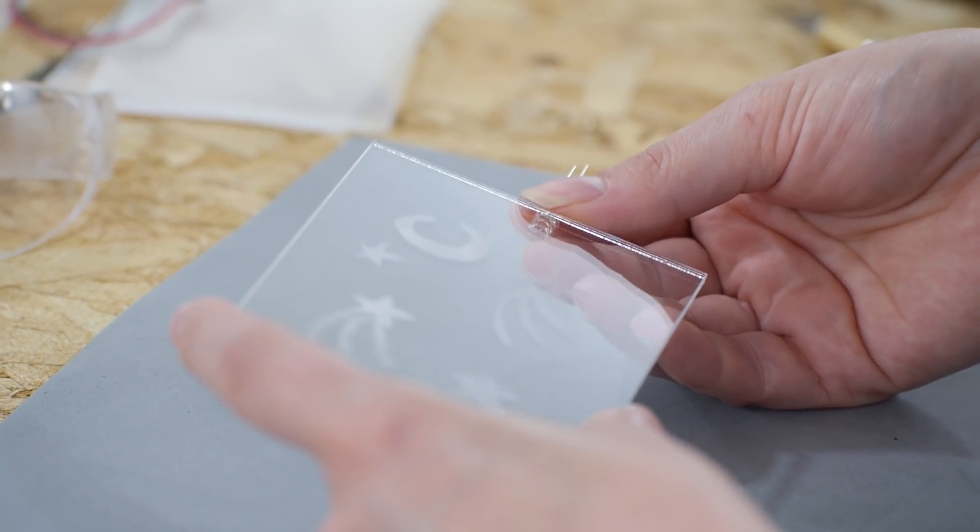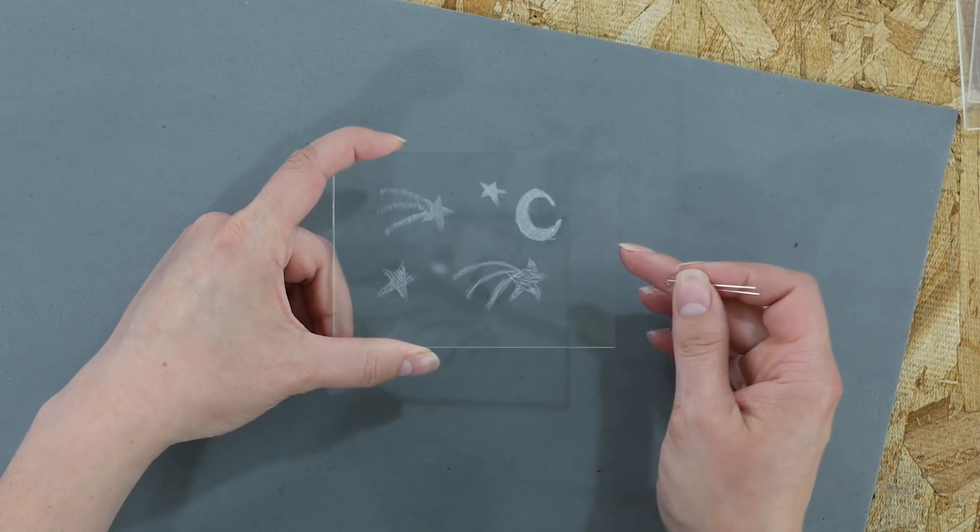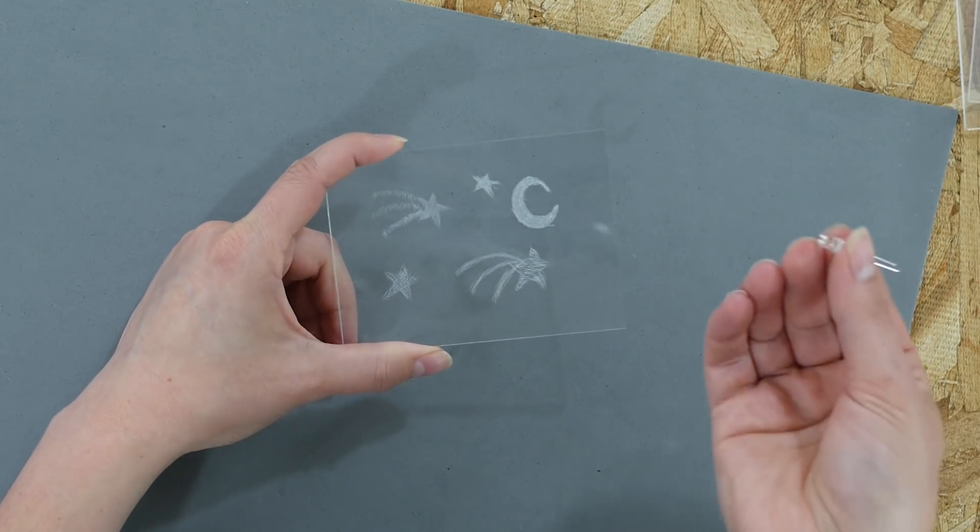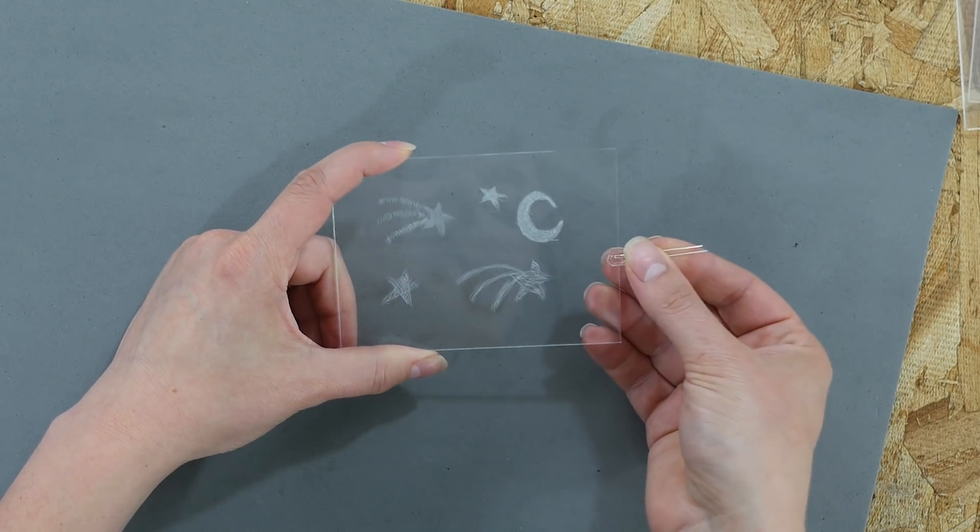This next step isn't required but I highly recommend it. If you cut a little notch in the edge of your acrylic it'll hold your LED in place and keep the light pointing exactly where you want it. Time to cut our acrylic!